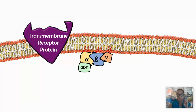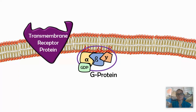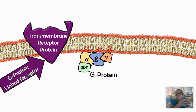The G-protein has three parts: alpha, beta, and gamma subunits — together called the G-protein. Right now this is an inactive G-protein, and we know this because it has a GDP. The purple membrane protein is a G-protein linked receptor, meaning it relies on a G-protein. The G-protein linked receptor relies on a G-protein to relay or pass on the message.